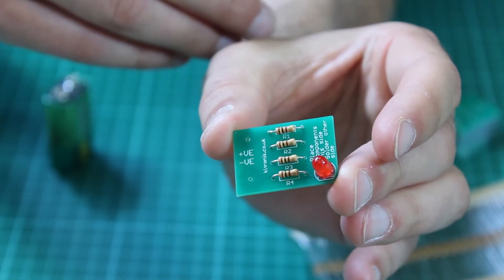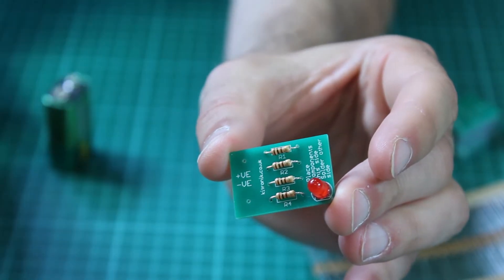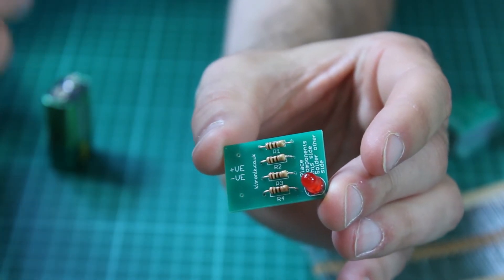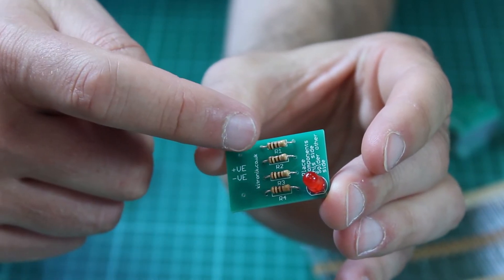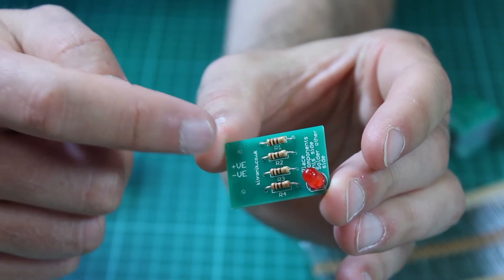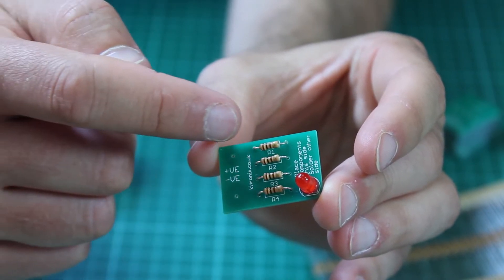Here is our learn to solder kit. It's a neat little board that allows users to learn to solder for the first time. The board consists of four resistors, which we can see here, and an LED. These parts...